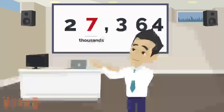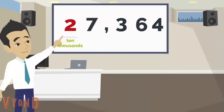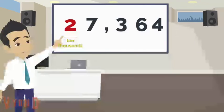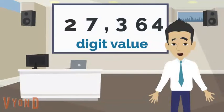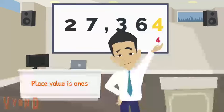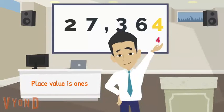If the underlined digit is 7, what is its place value? The answer is thousands. If the underlined digit is 2, what is its place value? The answer is ten-thousands. Now let's move on to digit value. You can see the same example on the board: 27,364.